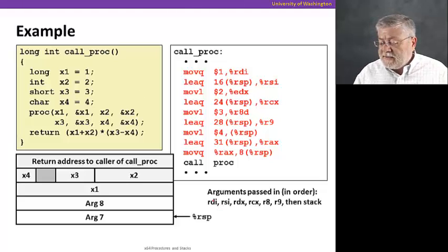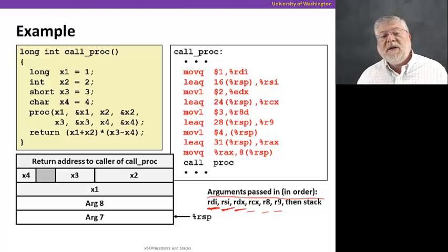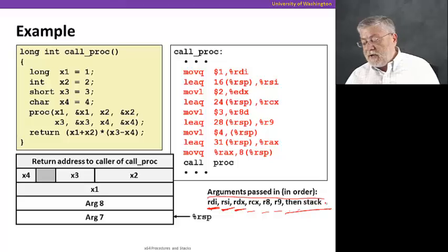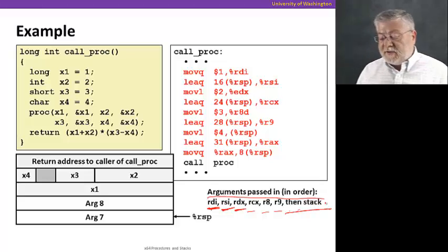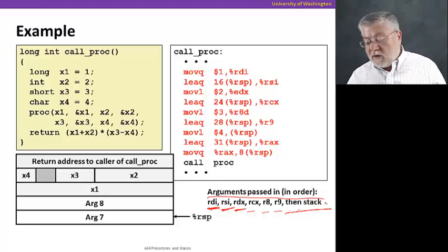Arguments are passed in a particular order in registers. The first argument has to go into RDI, the second into RSI, the third into RDX, RCX, R8, R9, until we got six arguments. The rest are gonna go on the stack. That means two more will have to go on the stack in this case because we have eight arguments.